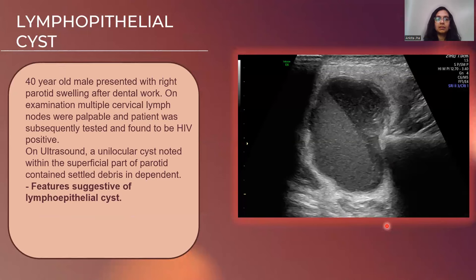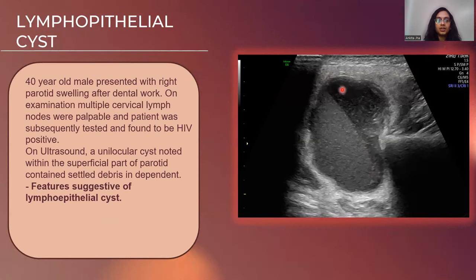Here we have a 40-year-old male patient who had a swelling over the right parotid region after some dental work. On examination, multiple cervical lymph nodes were palpable and the patient was subsequently tested and found to be HIV positive. On ultrasound, a unilocular cyst was noted in the superficial part of the parotid with settled debris in the dependent portion. These features were suggestive of a lymphoepithelial cyst.